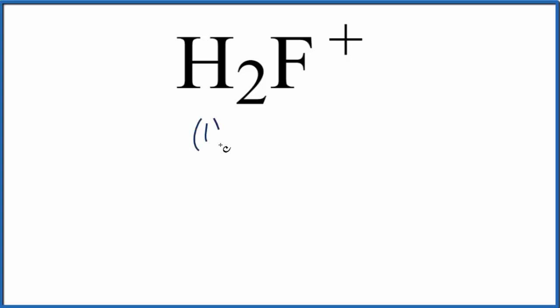Hydrogen has one valence electron, but we have two hydrogens. Fluorine is seven, and then this plus sign means we've lost an electron. We've lost a negative charge, so we need to subtract one valence electron. And if we add these numbers up, we get eight total valence electrons for the H2F+ Lewis structure.